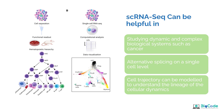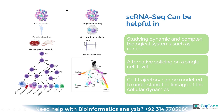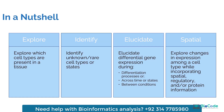Cell trajectory can also be modeled to understand lineage or cellular dynamics — how the cell is changing over time. For example, from a sample with multiple different cells, after cell preparation we can perform cell trajectory analysis to understand how the cell is changing over time based on its expression, known as cell trajectory or pseudotime analysis. In a nutshell, in single cell RNA sequencing each cell is taken, RNA is extracted, converted into cDNA, a gene count is taken, and then data visualization is performed.